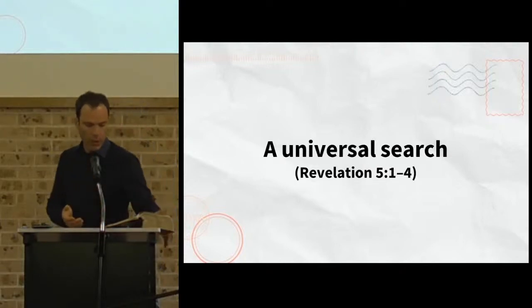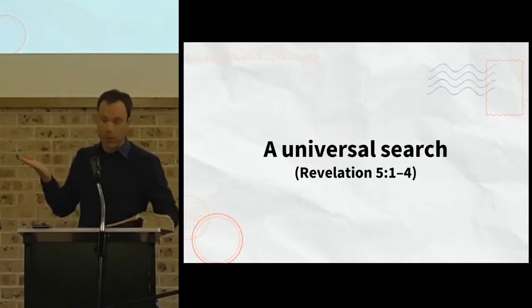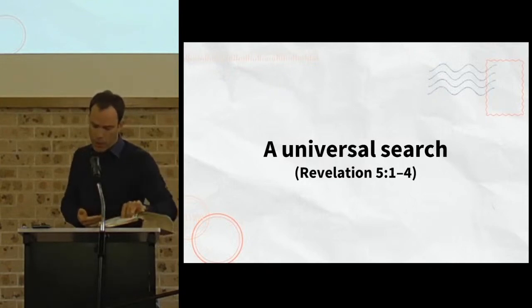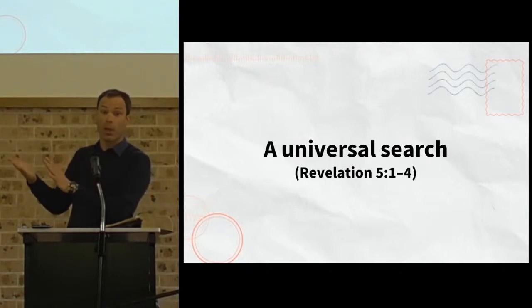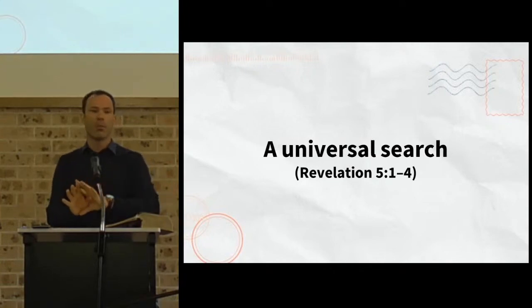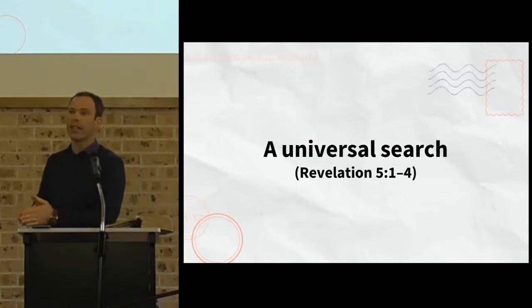Verse 1. John sees the scroll in the right hand or probably better on the right hand, which suggests it's there to be taken, of him who sat on the throne, that's God the Father, with writing on both sides. So it's a very full scroll. Normally scrolls were only written on one side and sealed with seven seals. Now as Revelation continues, it will become clear that this scroll represents God's plans for the fulfillment of all of history, the destiny of the world, especially the judging and saving plans of God.